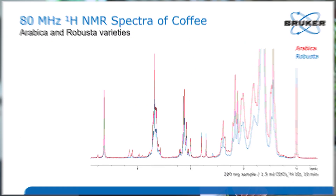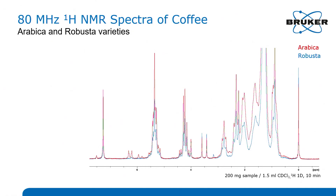So now we've got our sample — let's analyze it together. What you see here is the spectrum of the sample that we just acquired, shown in blue. This was a robusta variety.